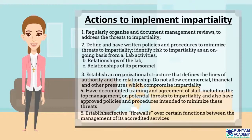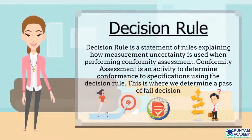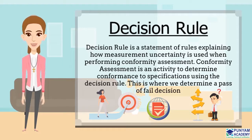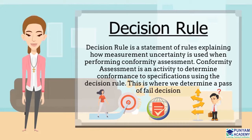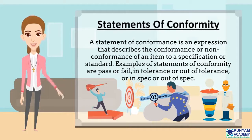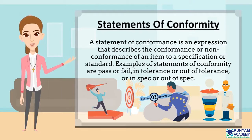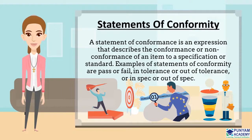Let's move on to the next topic: decision rule. A decision rule is a statement of rules explaining how measurement uncertainty is used when performing conformity assessment. Conformity assessment is an activity to determine conformance to specifications using the decision rule — this is where we determine a pass or fail decision. Before you learn about decision rules, you should know about statements of conformity. A statement of conformance is an expression that describes the conformance or non-conformance of an item to a specification or standard. Examples include pass or fail, in-tolerance or out-of-tolerance, or in-specification or out-of-specification.